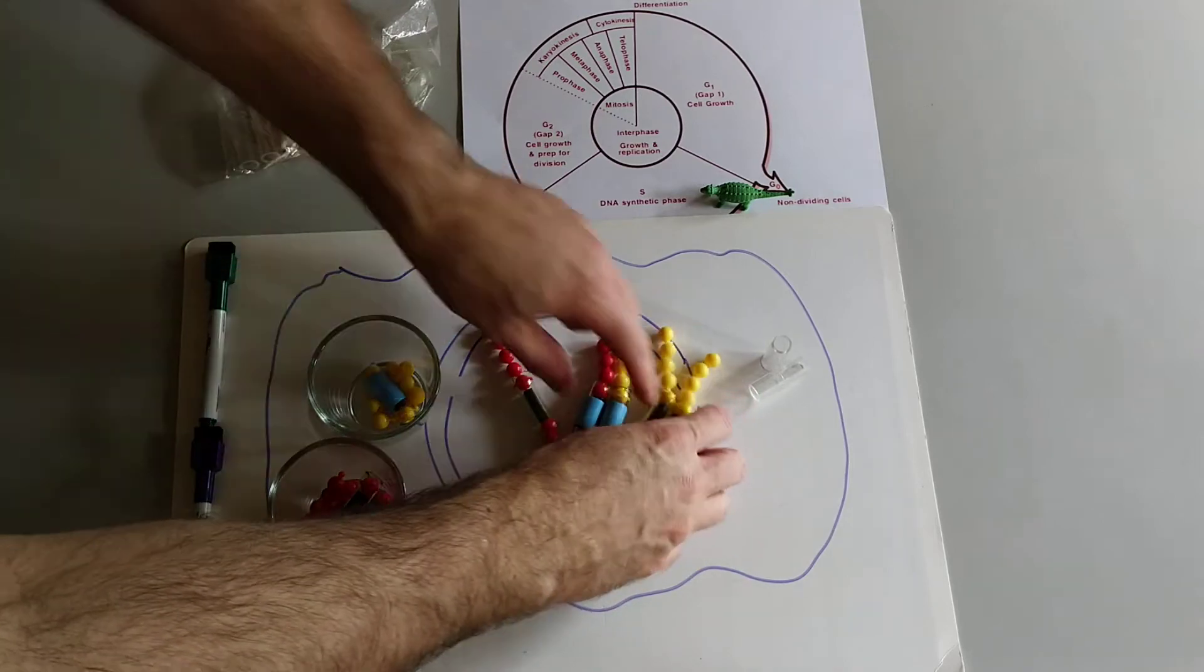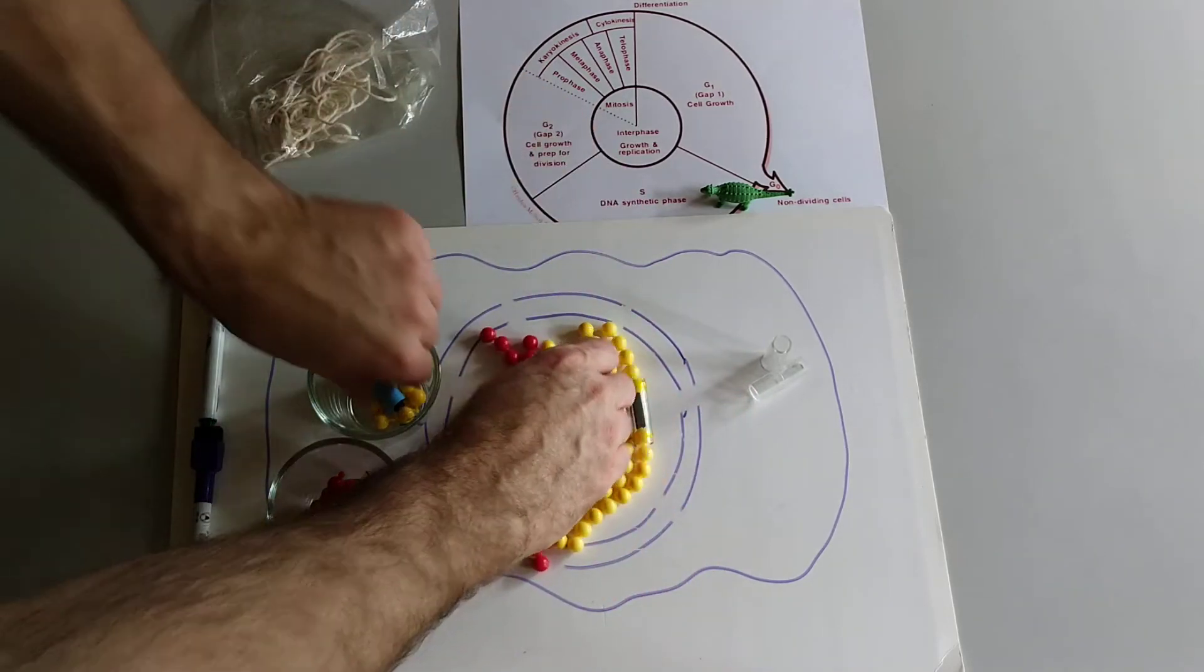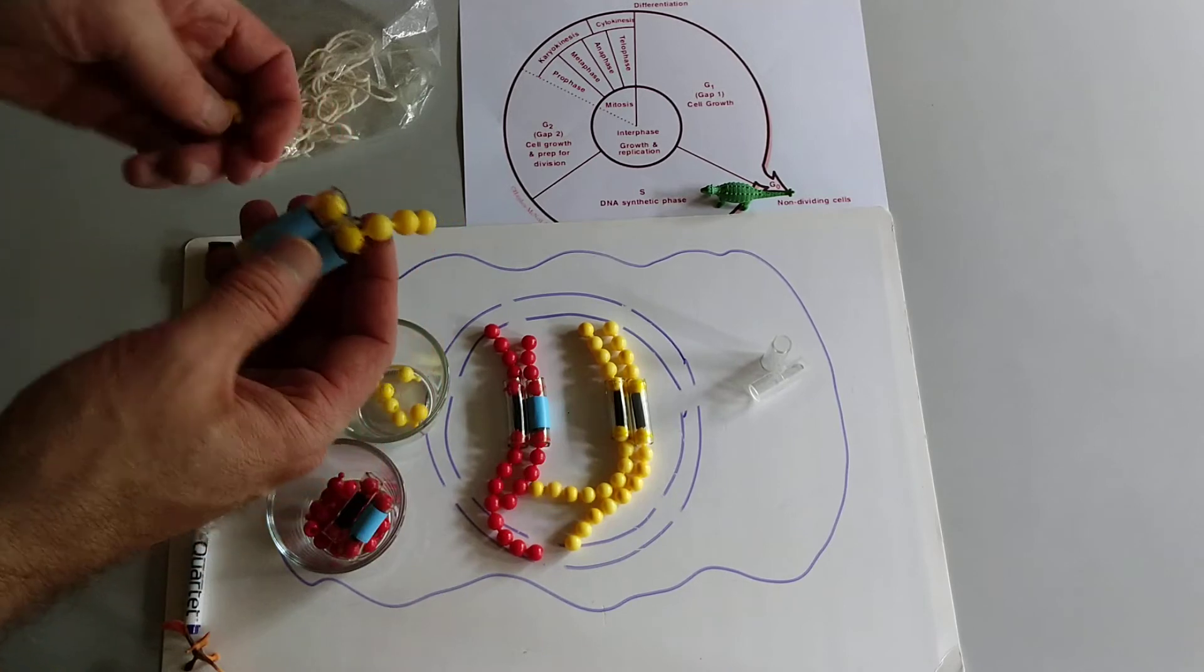And then we have one replicated chromosome. We'll replicate the short maternal chromosome here.